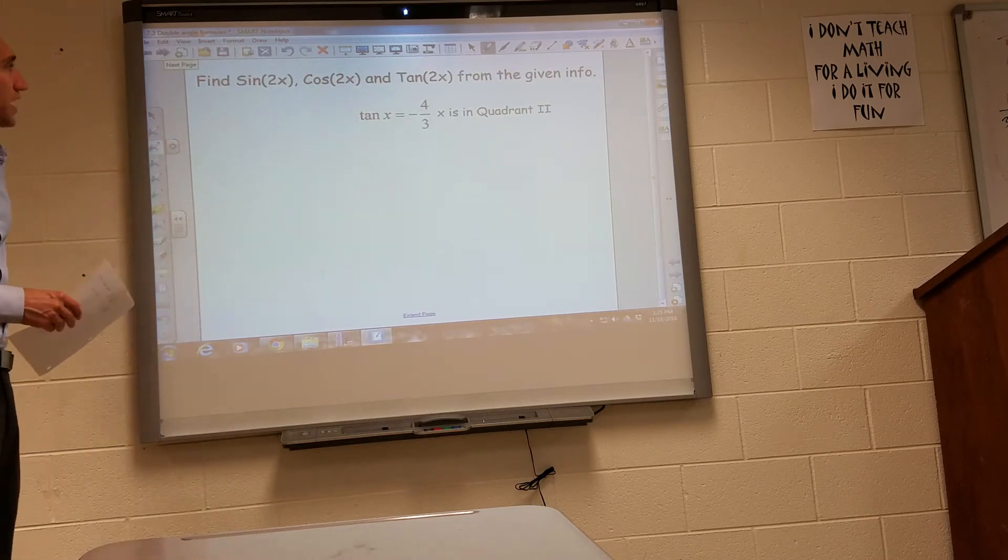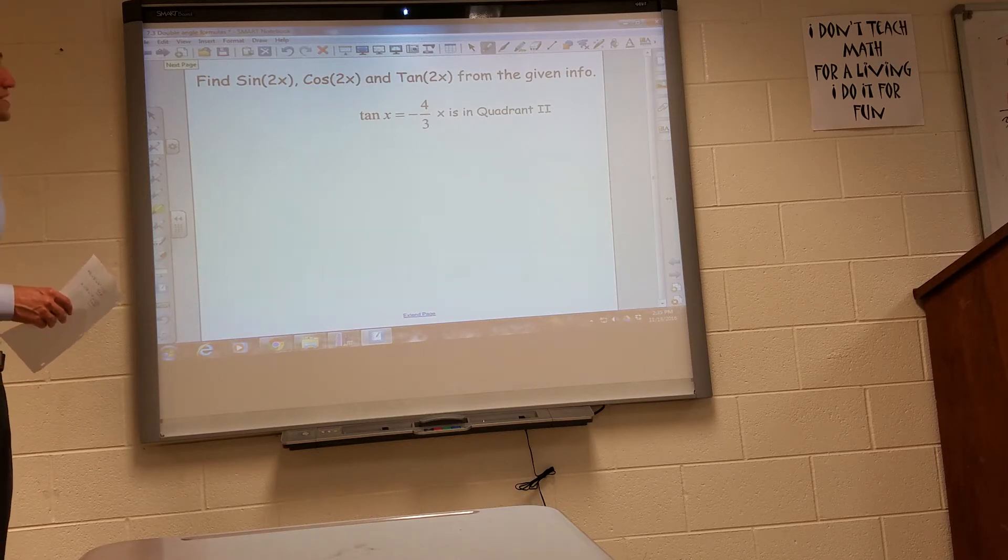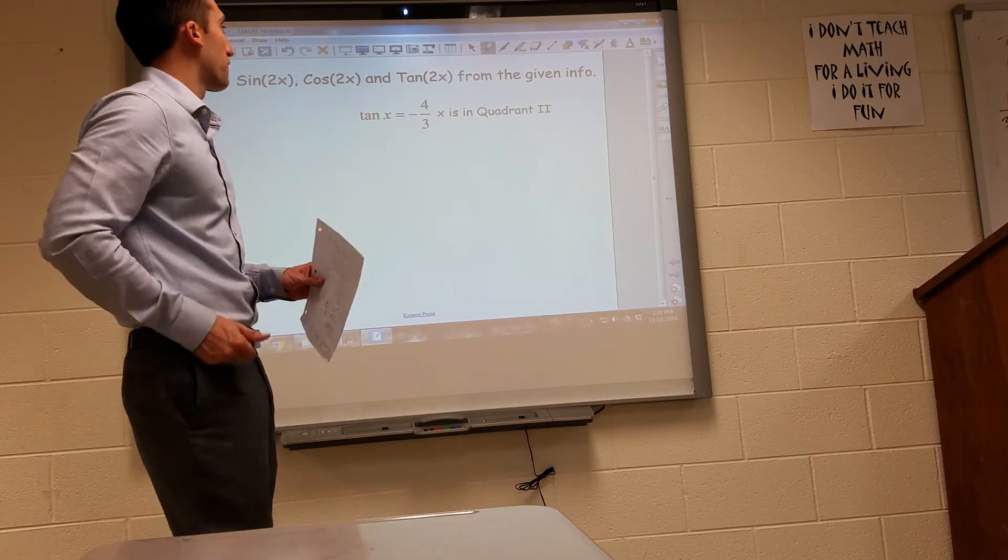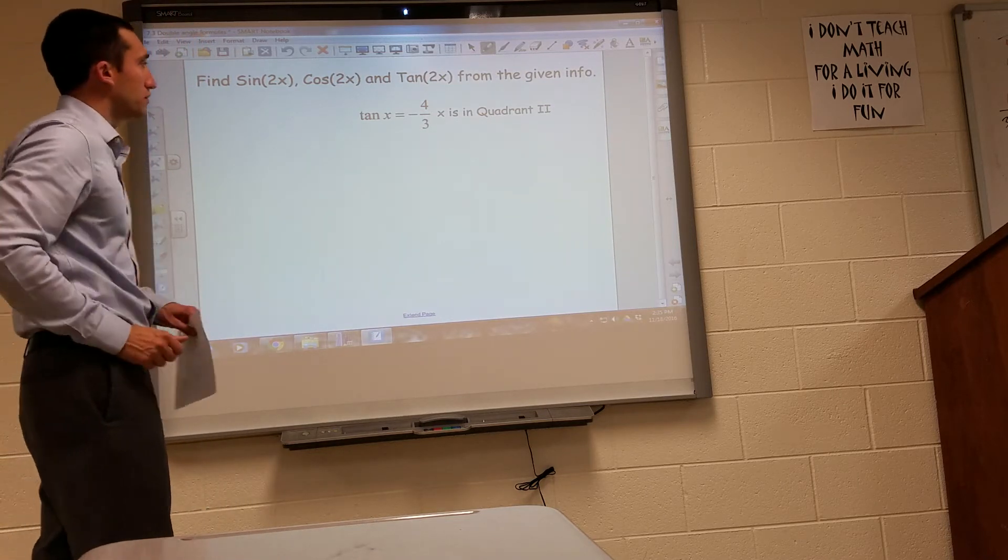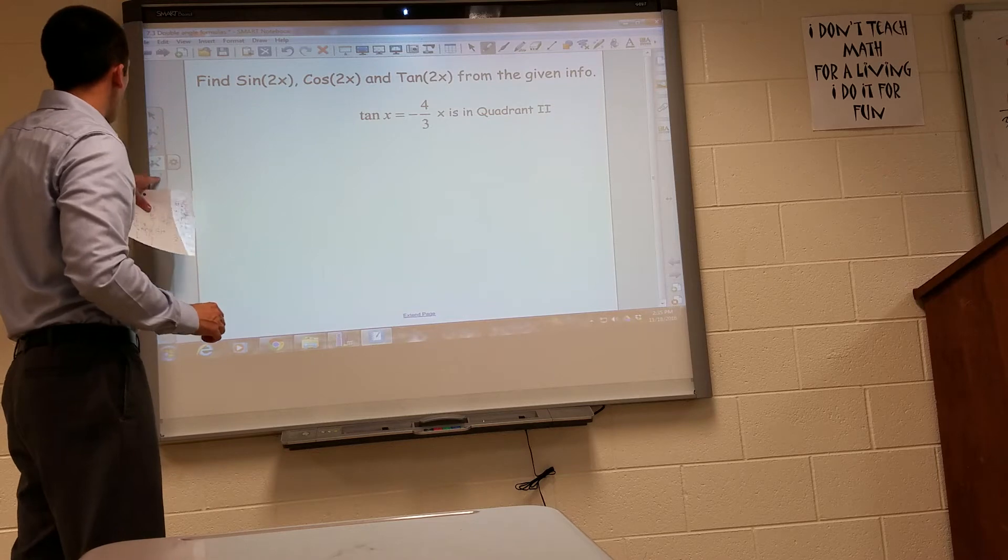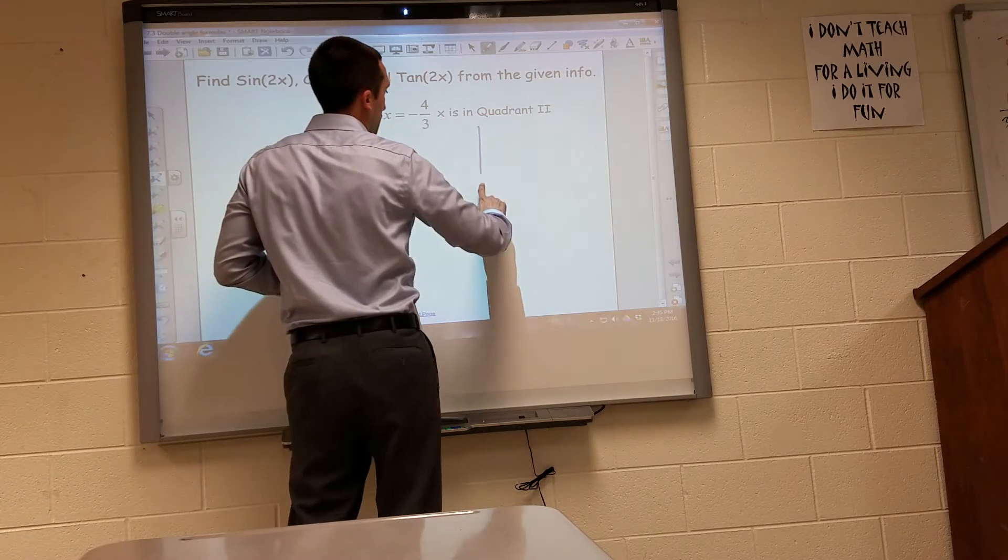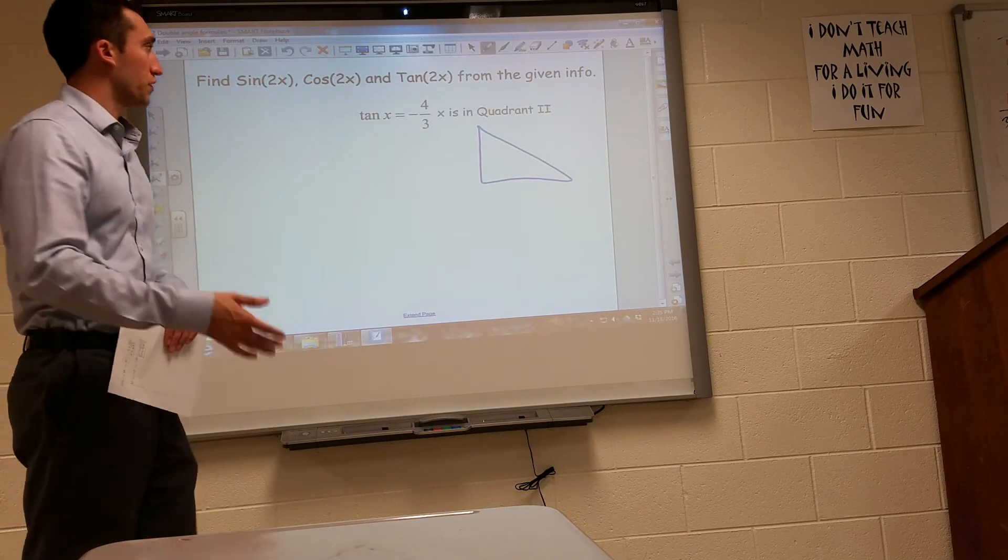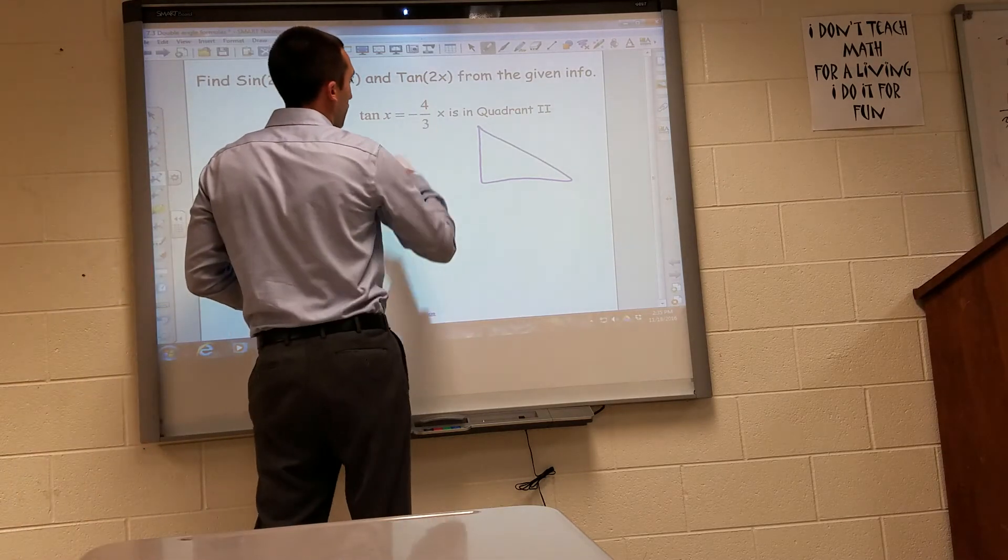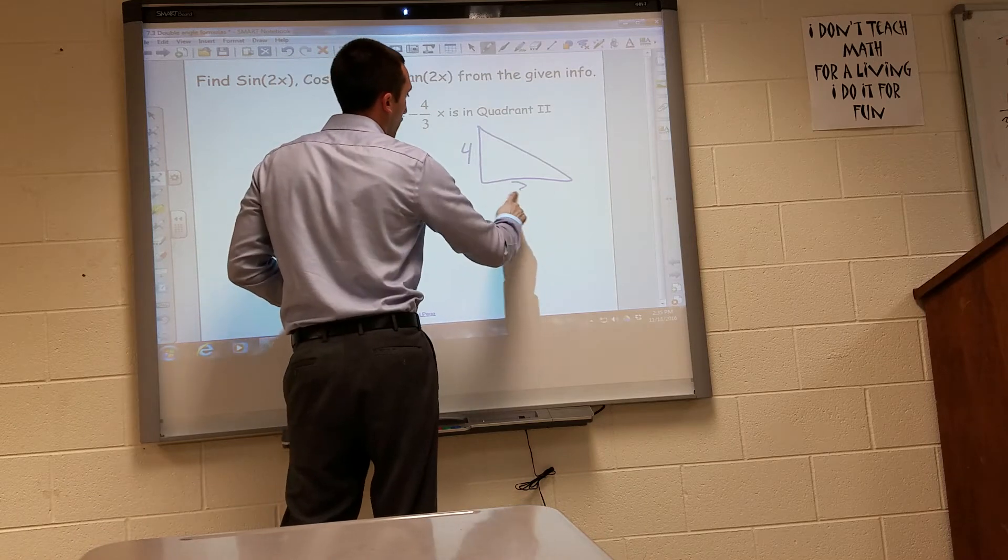Next, we need to find sine of 2x, cosine of 2x, and tangent of 2x from this given information. So we know we're in quadrant 2. I'm going to draw a triangle in quadrant 2. And since tangent is opposite over adjacent, we should have learned that. So opposite over adjacent.